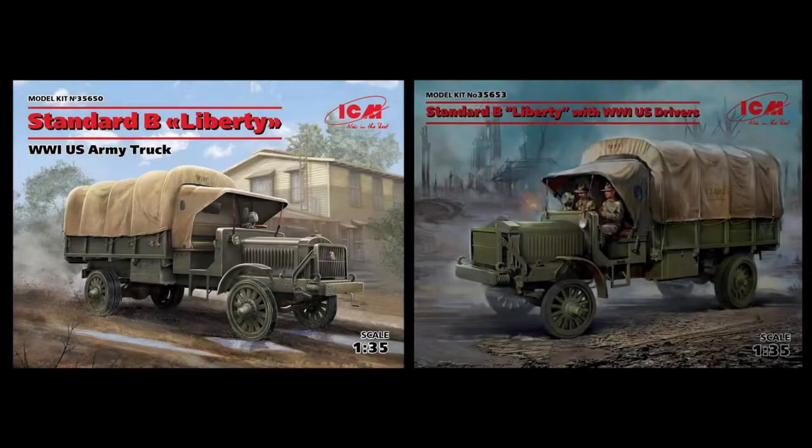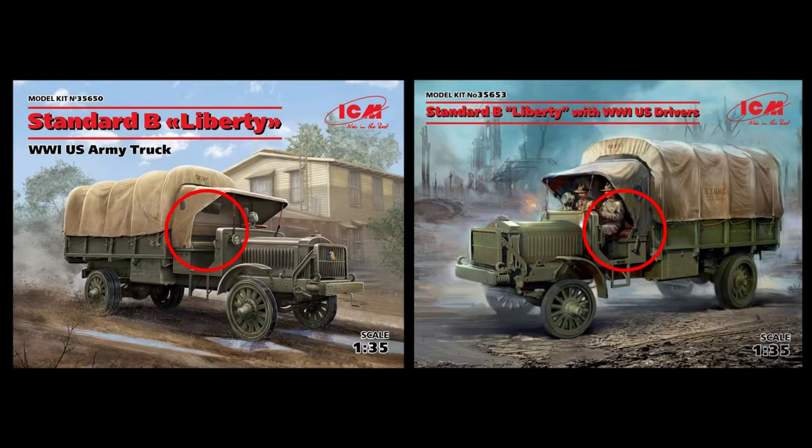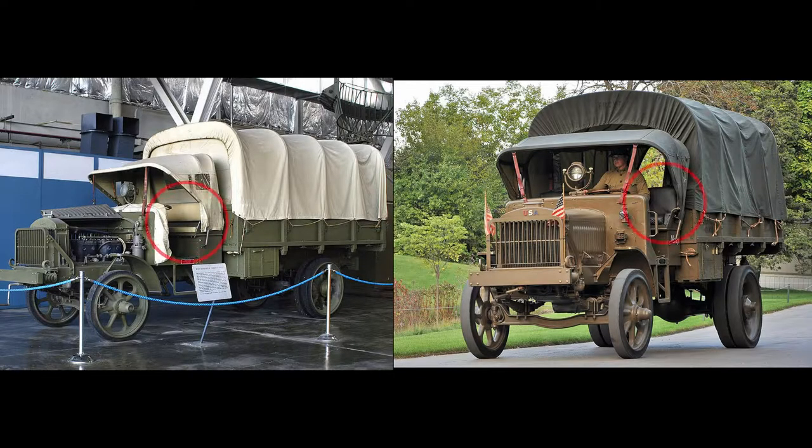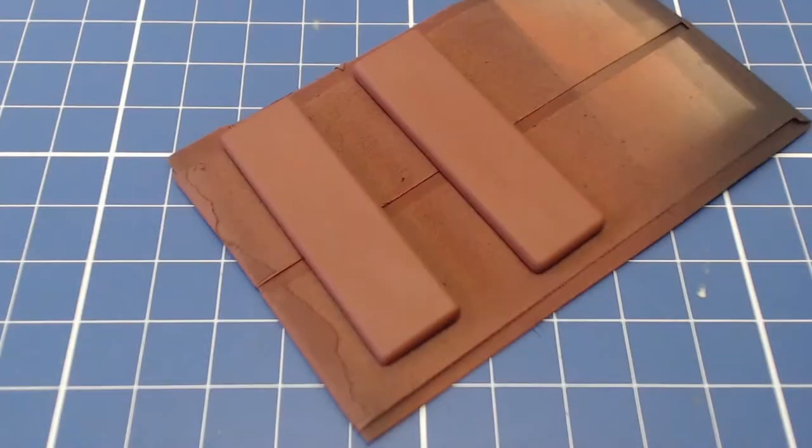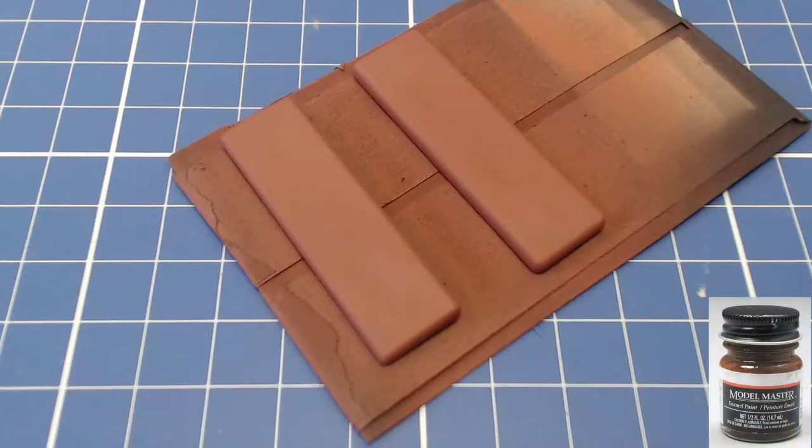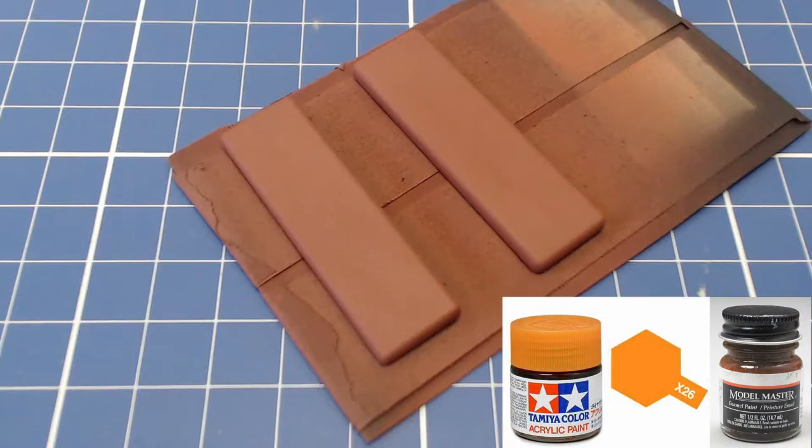I've never seen color period photos of the Liberty but ICM depicts the trucks seats as both canvas covered and leather. These restorations show canvas colored and black seats. The seat color is really a matter of choice but I decided on a leather brown color. I used an old bottle of Model Master rust enamel for the base coat and I over sprayed it with Tamiya clear orange.